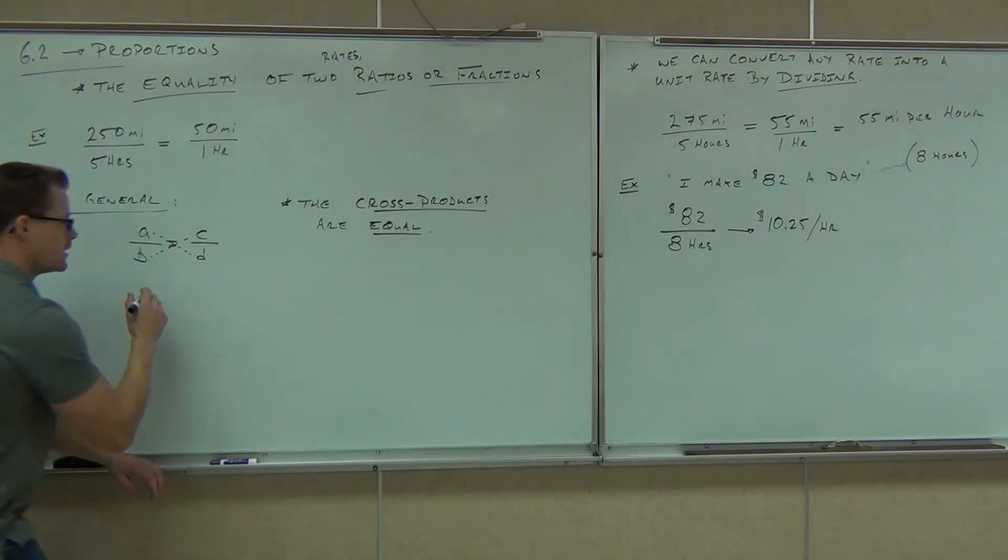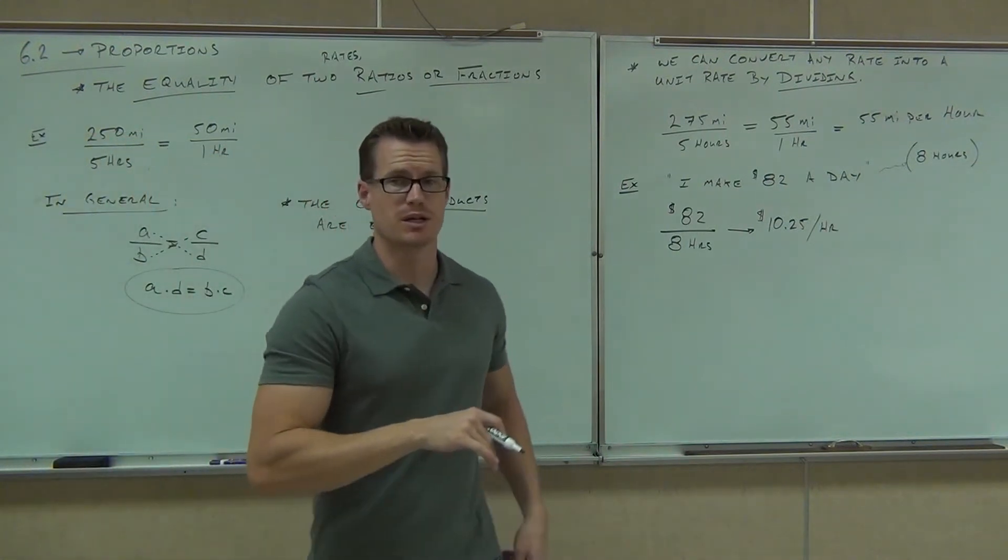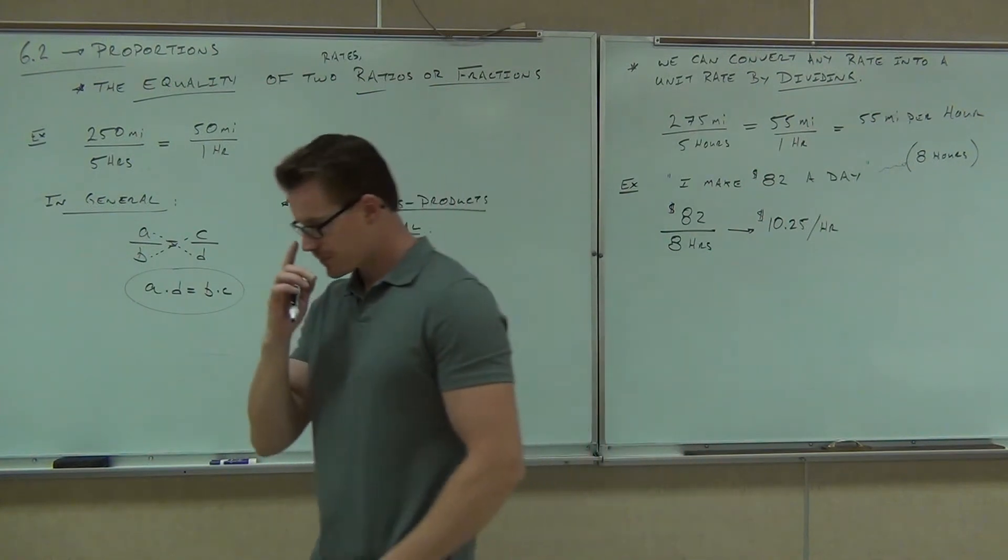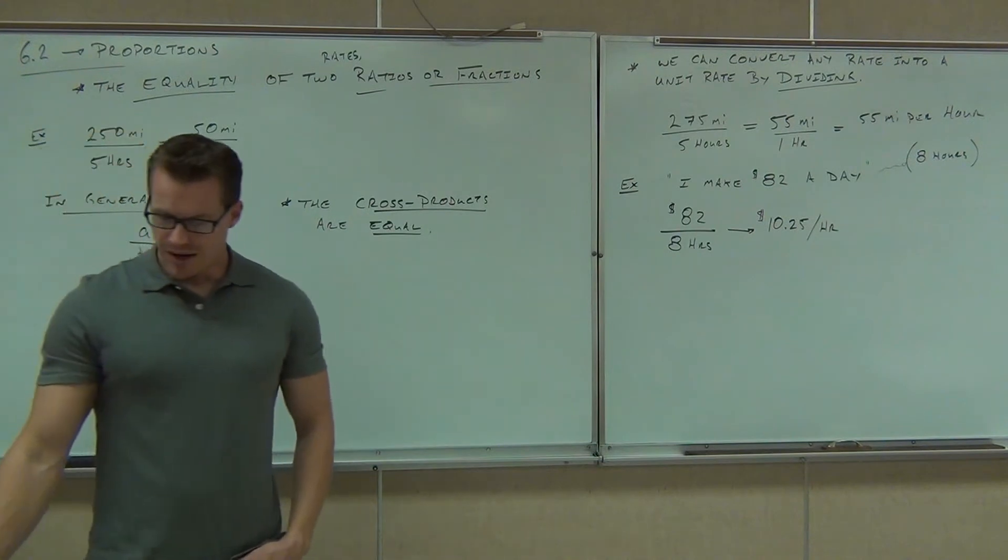and it must equal B times C. That's got to be true. The cross products must absolutely be equal if you have a true proportion. By the way, this allows you to check to see if a proportion is true.